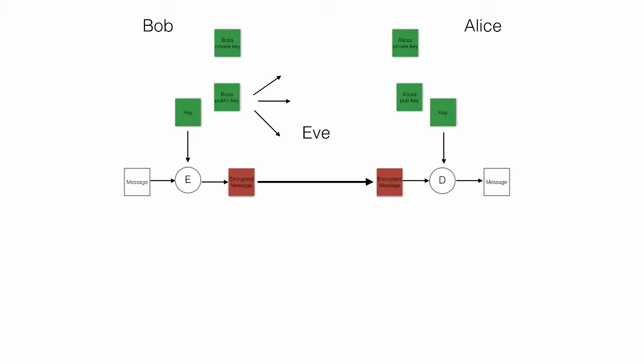Alice does the same — creates a key pair, keeping the private key to herself and giving the public key away to anyone who wants it. We can also assume that Eve has a key pair of her own. Maybe Bob and Alice have a copy of Eve's public key and Eve has Bob's and Alice's public key. The important thing to remember is that neither Alice nor Eve knows Bob's private key, and neither Bob nor Eve knows Alice's private key.